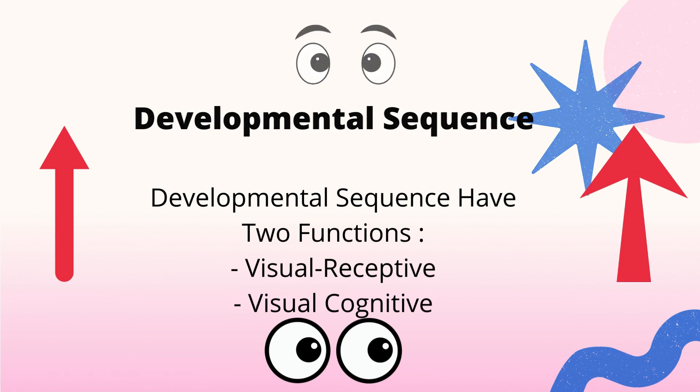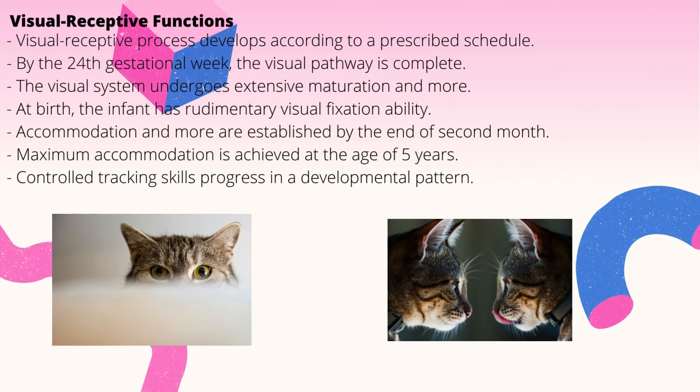Visual receptive functions: the visual receptive process develops according to a prescribed schedule which begins in the womb. By the 24th gestational week, the visual pathway is complete. The visual system undergoes extensive maturation, including the retina and visual cortex, usually between the 24th and 48th gestational week.